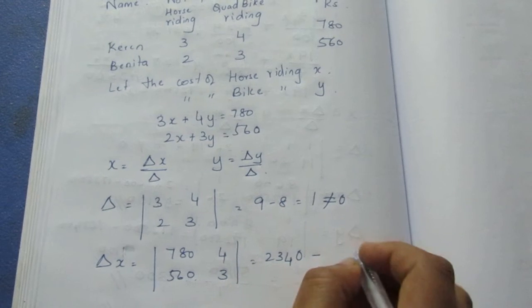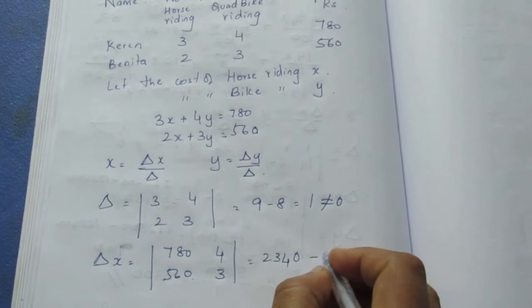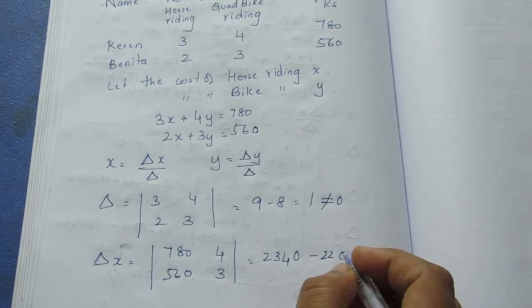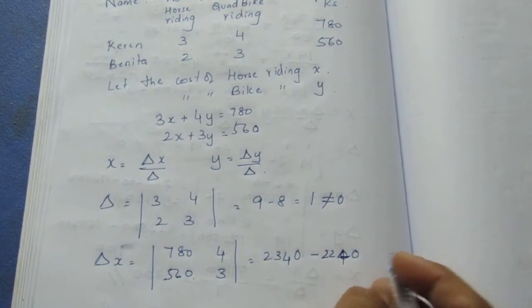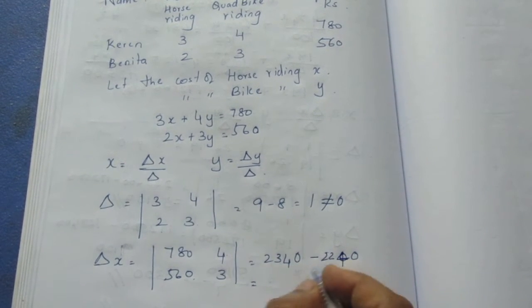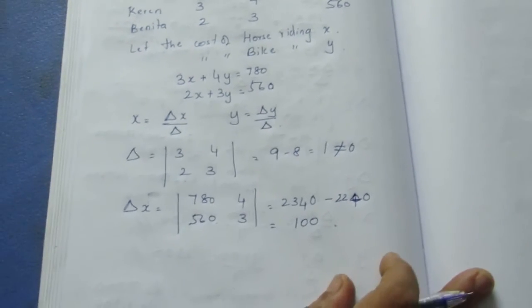If we subtract, 2340 minus 2240 equals 100. So determinant x equals 100.